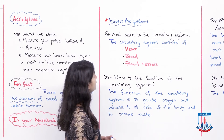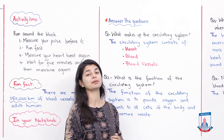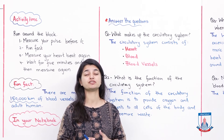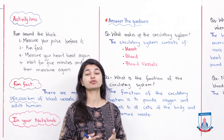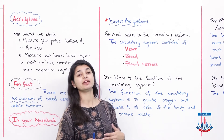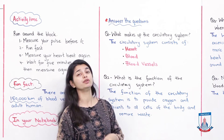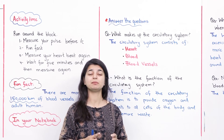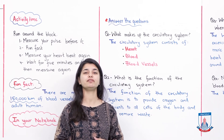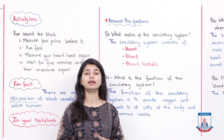Answer the questions. Question 1: What makes up the circulatory system? The first question is very easy. The circulatory system consists of — it is made up of heart, blood, and blood vessels. These are three things, and it is important to know the name of all three. That's it for question number 1.